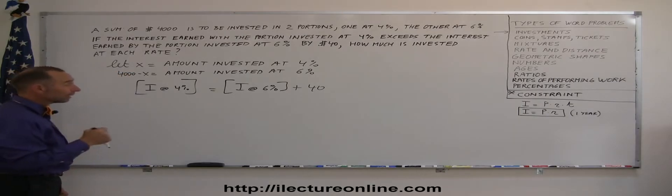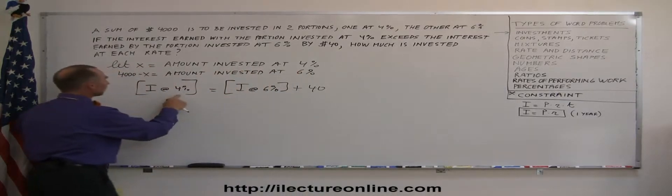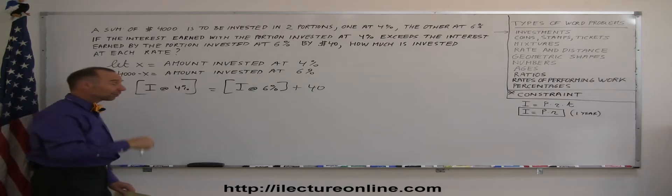The interest earned at 4% is equal to $40 more than the interest earned at 6%. We're ready to go. Now, of course, again, the interest earned is equal to the principal times the rate.